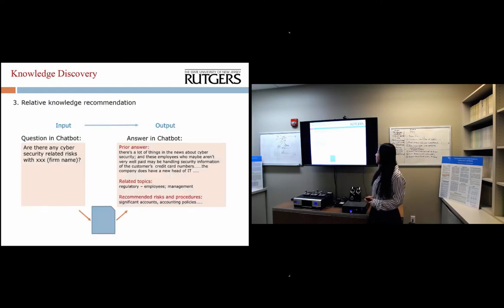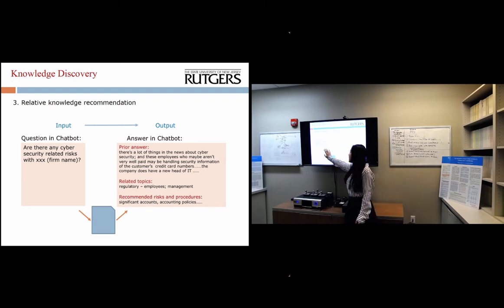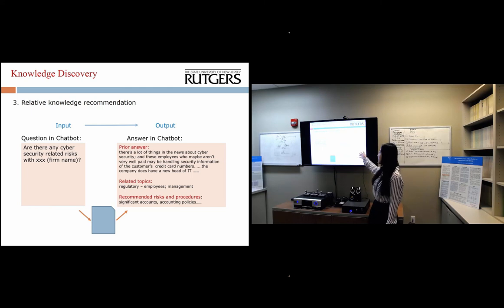Here shows one example of the relative knowledge recommendation. If a user asks the chat board about whether there are risks about cybersecurity, then we give them the answer in the chat board. One part is from the existing answers we extracted from the knowledge we collected, and then we provide the related topics to provide suggestions for the auditors to discuss. These are based on the topic linkages we identified. We also have recommended risks and procedures based on our predefined rules. This may be from the checklist or the requirement of the audit firm.